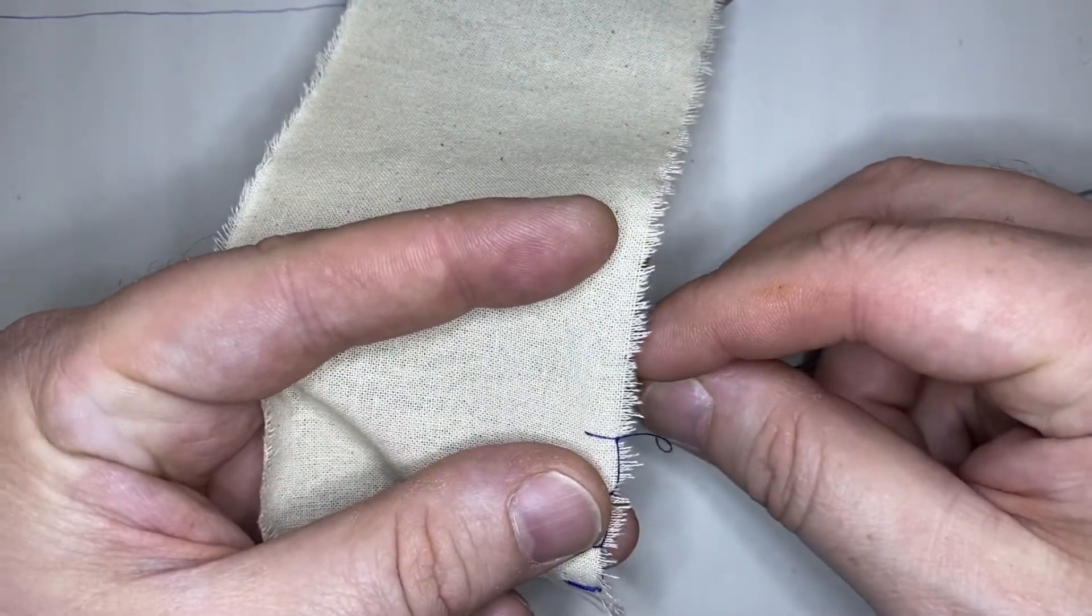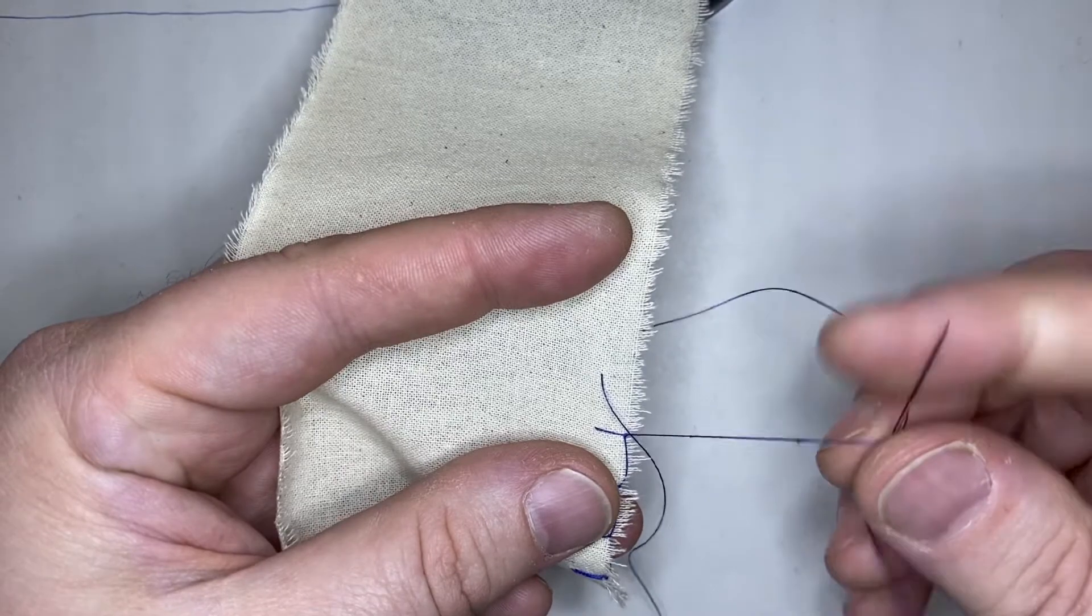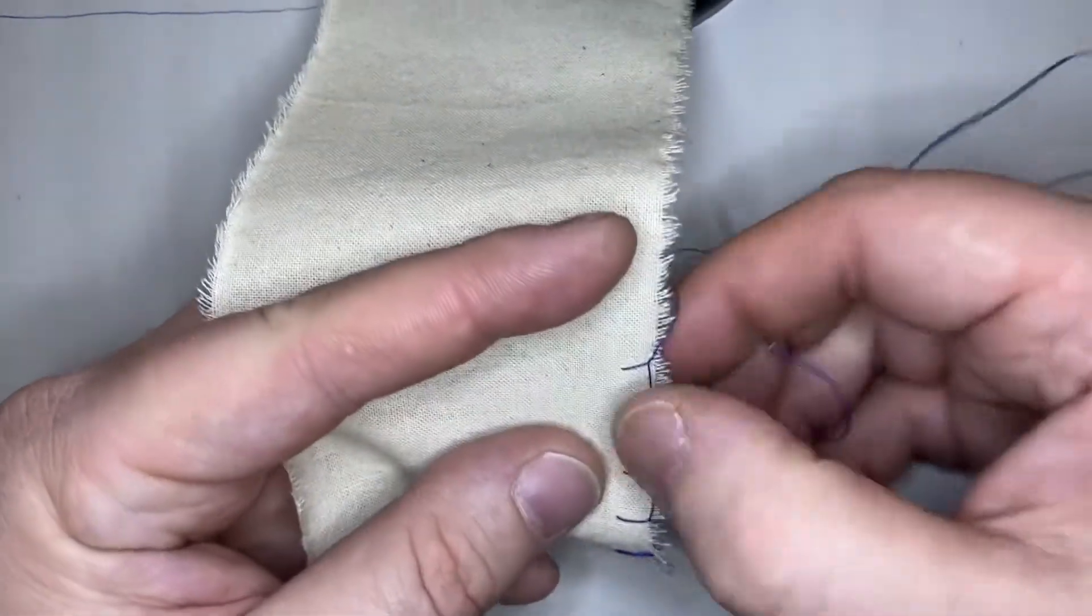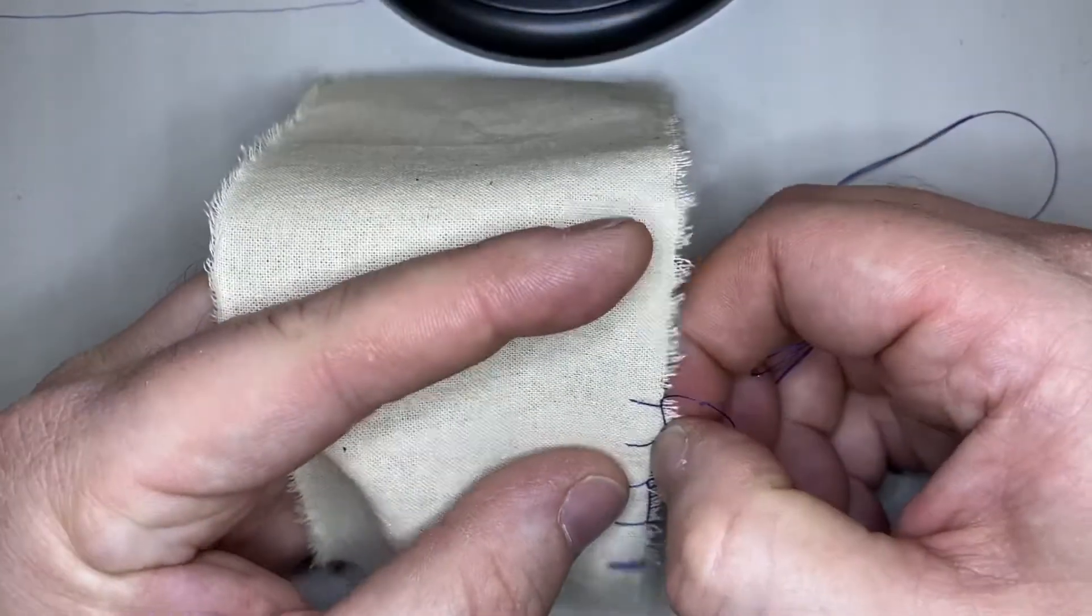You might have to practice this one a few times to get it, but eventually it becomes really rhythmic, and people do this as a decorative stitch on the edge of blankets a lot. Oddly enough, that's why it's called the blanket stitch. It's also just a nice way to finish off fabric.